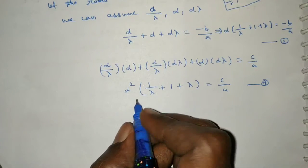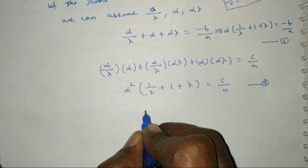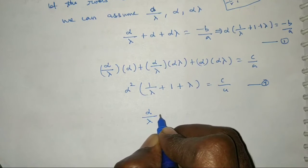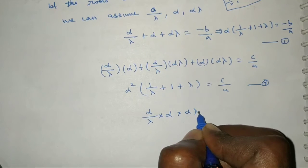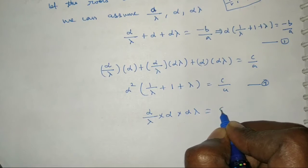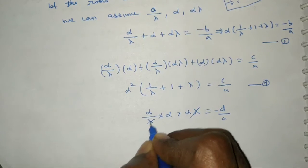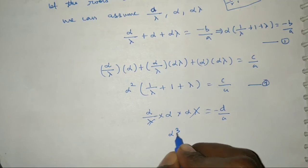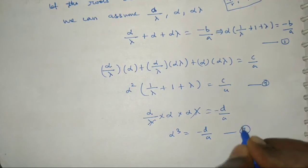The product of all three roots equals −d/a. So (α/λ)(α)(αλ) = −d/a, which gives α³ = −d/a. This is equation 3.